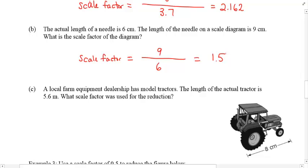Okay, how about this next one, part C. A local farm equipment dealership has model tractors, and the length of the actual tractor is 5.6 meters. Huh. What's the scale factor that was used for this reduction? Now notice I see here centimeters, and I see here meters. That's a problem. We should always compare things with the same units. So do you remember how we did those unit conversions? One meter is equivalent to how many centimeters? That's right, 100. So 5.6 meters would be just multiplying by 5.6. 100 times 5.6 must be 560 centimeters.